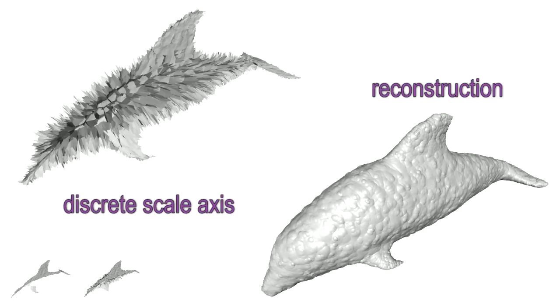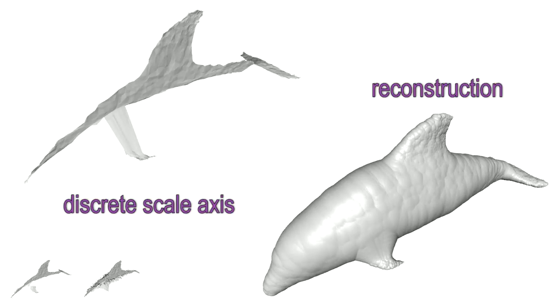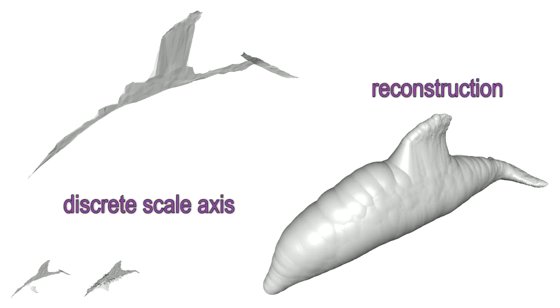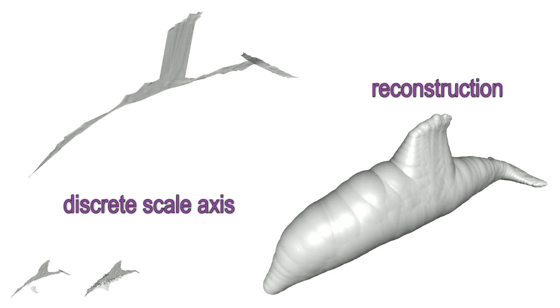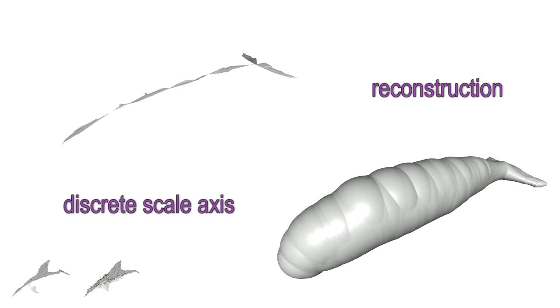Our method, the discrete scale axis, uses a geometric construction that is able to identify the important features of a shape by preserving the topology of the medial axis. Note how the fins and the tail are completely preserved while the noise is eliminated. At higher simplification factors, the fins and the tails are classified as less important than the trunk, and they will be removed.